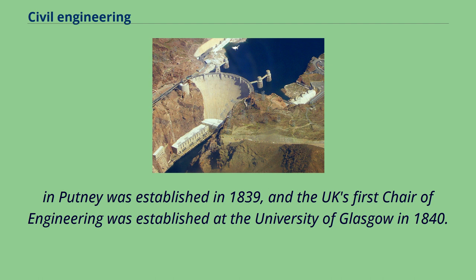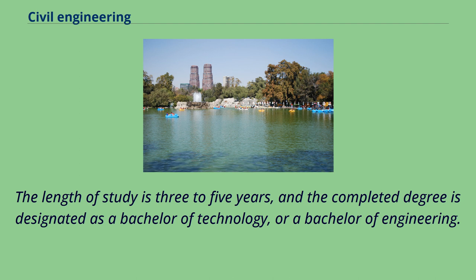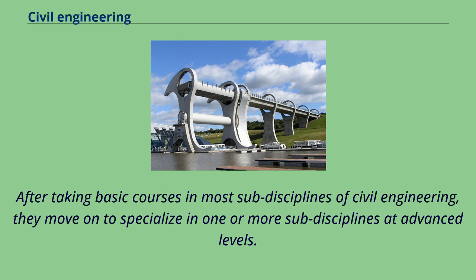Civil engineers typically possess an academic degree in civil engineering. The length of study is three to five years, and the completed degree is designated as a Bachelor of Technology or a Bachelor of Engineering. The curriculum generally includes classes in physics, mathematics, project management, design and specific topics in civil engineering. After taking basic courses in most sub-disciplines of civil engineering, they move on to specialize in one or more sub-disciplines at advanced levels.